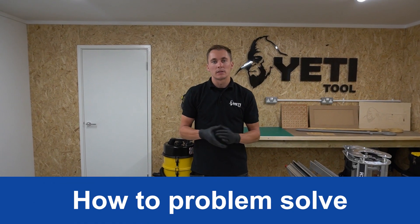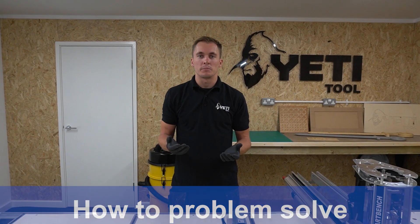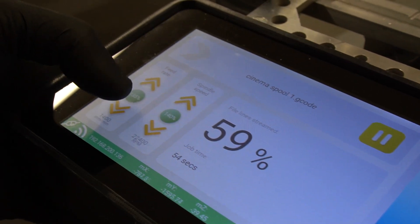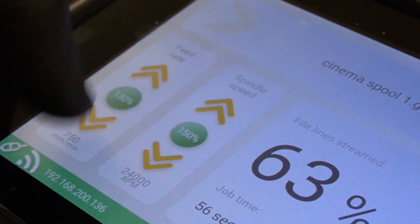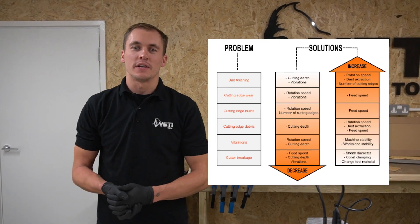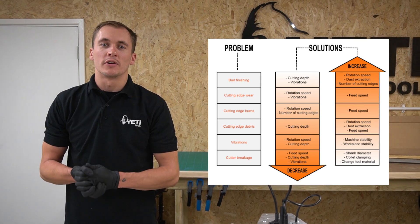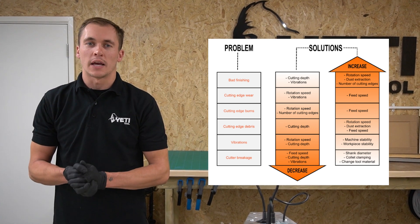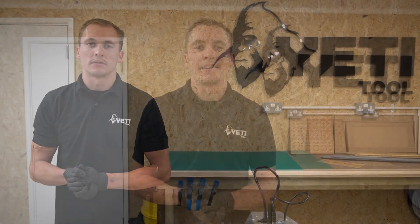Problem solving. You can make adjustments to your feeds and speeds at any time during your job — these can be changed in 5% increments for fine adjustment. If you have any problems related to feeds and speeds and cutting, we've put some extra resources in our knowledge base to help you get to a solution. We've put a link in the description below.